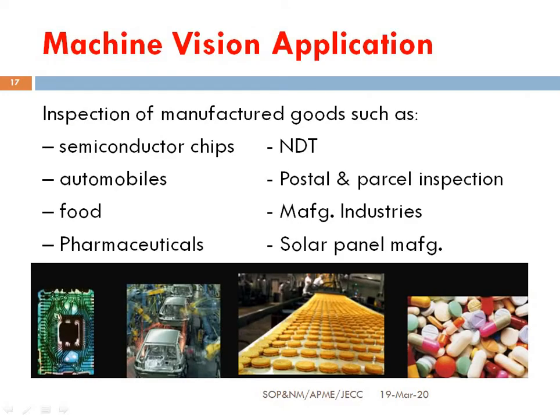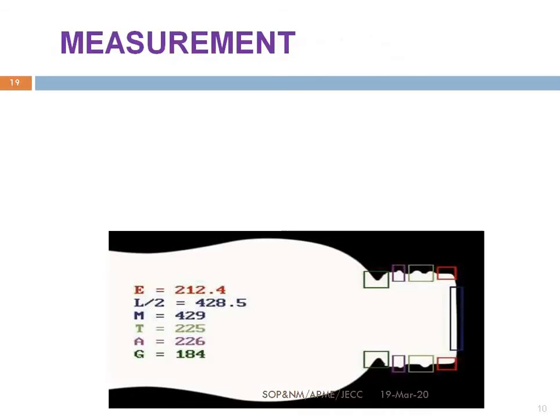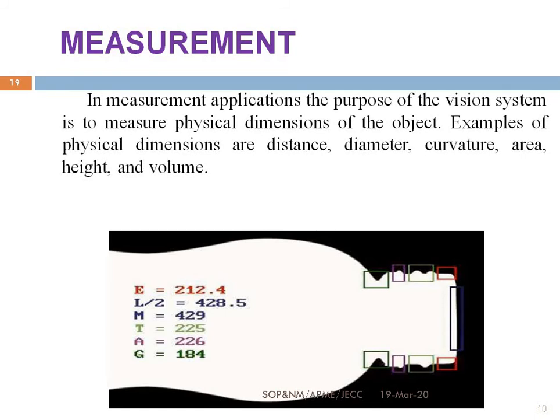Next, we discuss machine vision applications. Machine vision systems are used in many industries — for example: semiconductor chips, automobiles, food, pharmaceuticals, NDT, postal and parcel inspection, manufacturing, and solar panel manufacturing. The major applications of machine vision are controlled into four parts: measurement, counting, location, and decoding. For measurement, the machine vision system measures physical dimensions of objects — examples include distance, diameter, curvature, area, height, and volume.